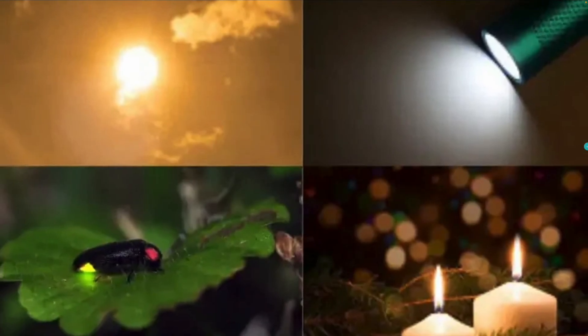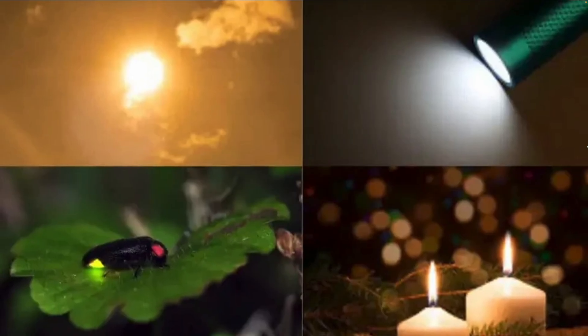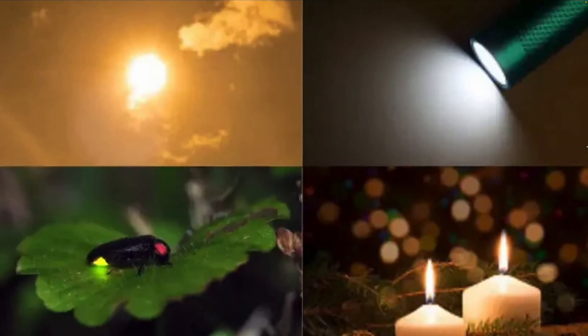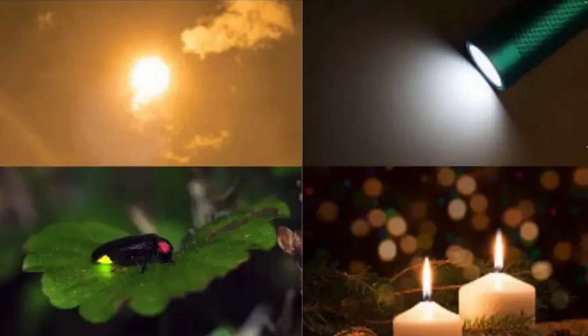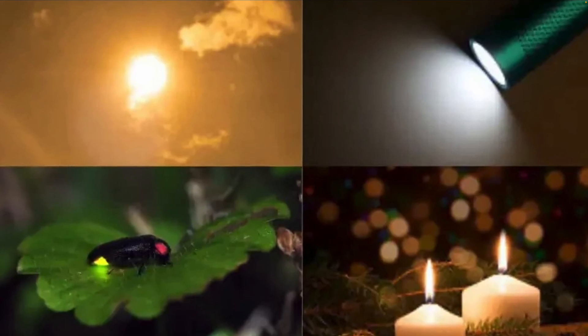Some things can be seen because they produce their own light. These are called light sources. For example, the sun, a torch, a candle, and even a firefly. Without them, the world would be completely dark.